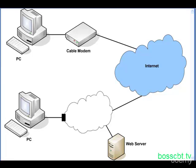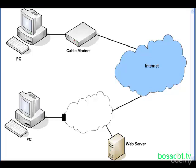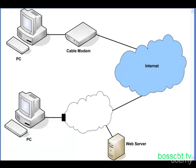The most important defining characteristic of a SOHO Network is that it's a small network. Generally, one to ten users are found on the SOHO Network — that's a rule of thumb, it could be a little bit outside that range. The primary purpose of a SOHO Network is to enable Internet access, which means access to remote resources and also access to local resources.